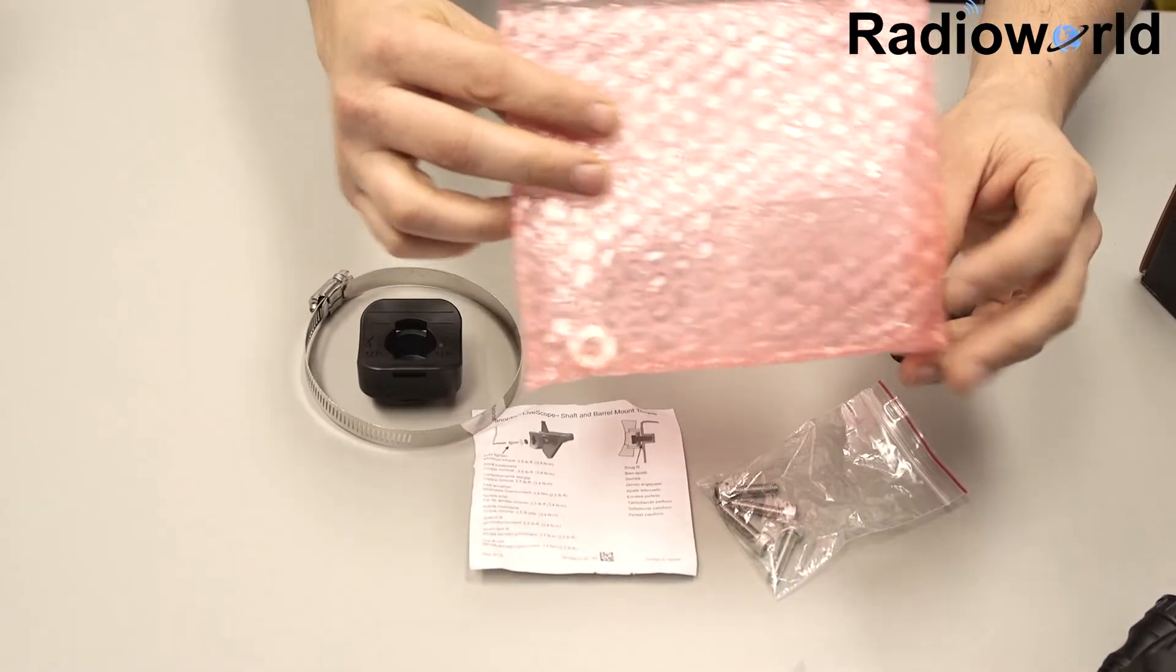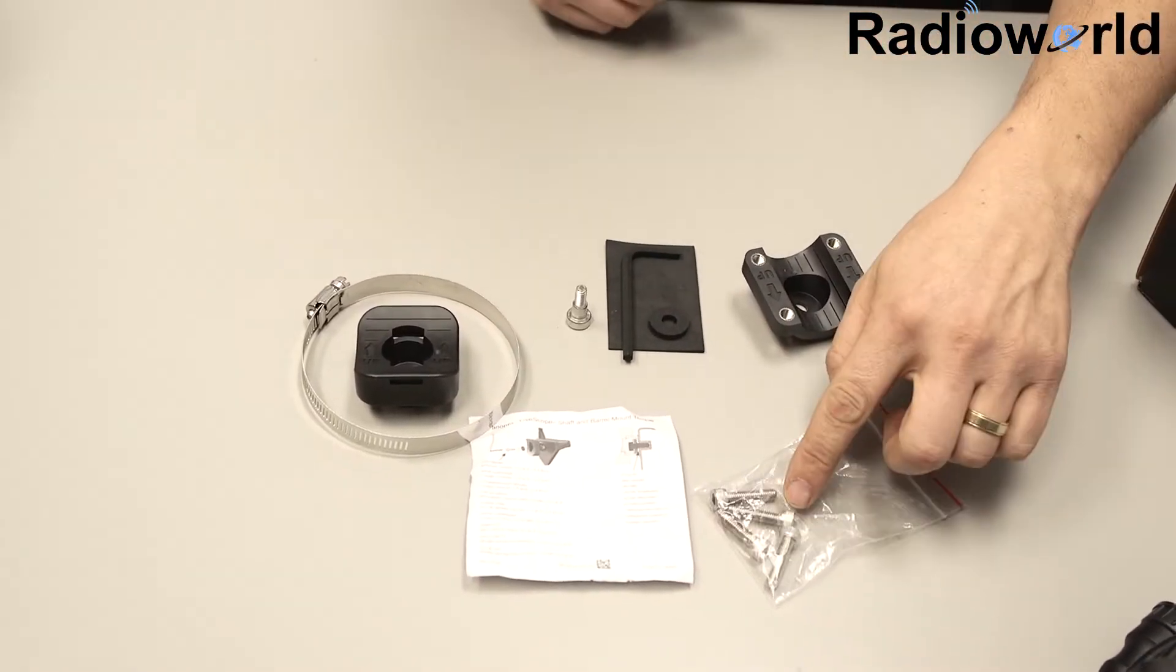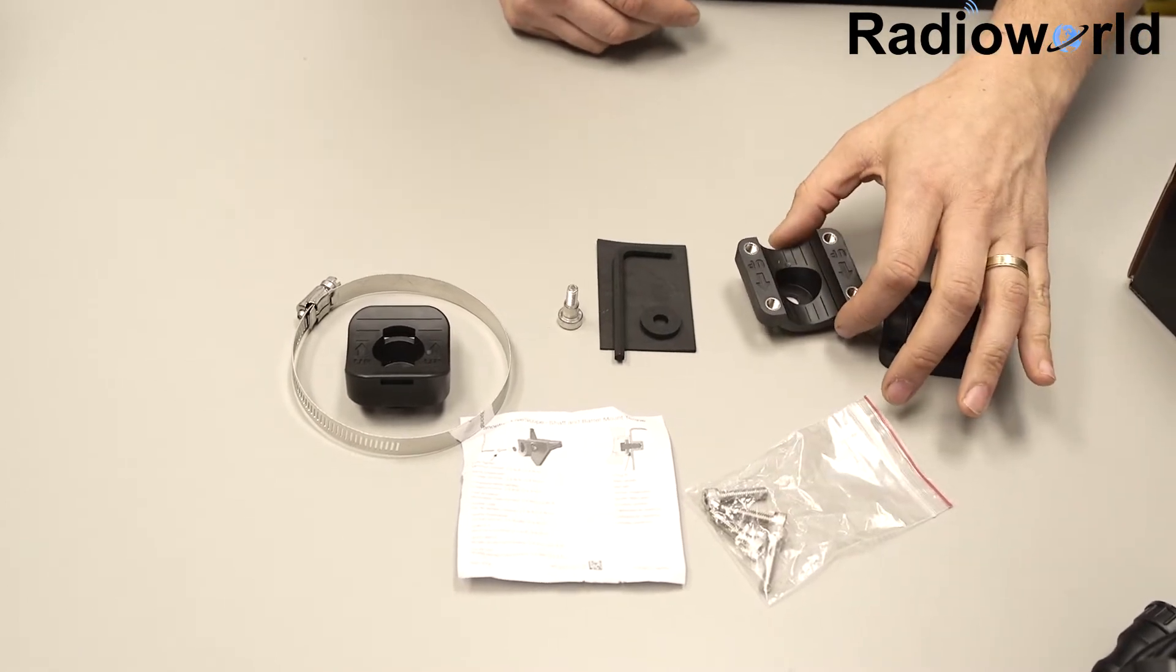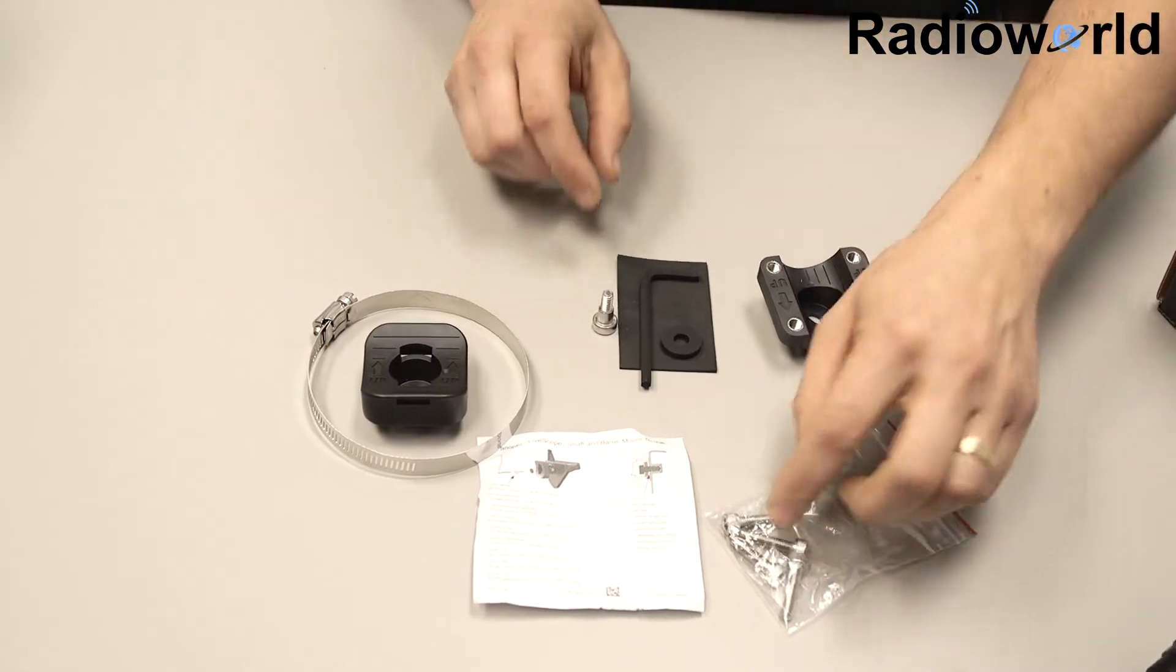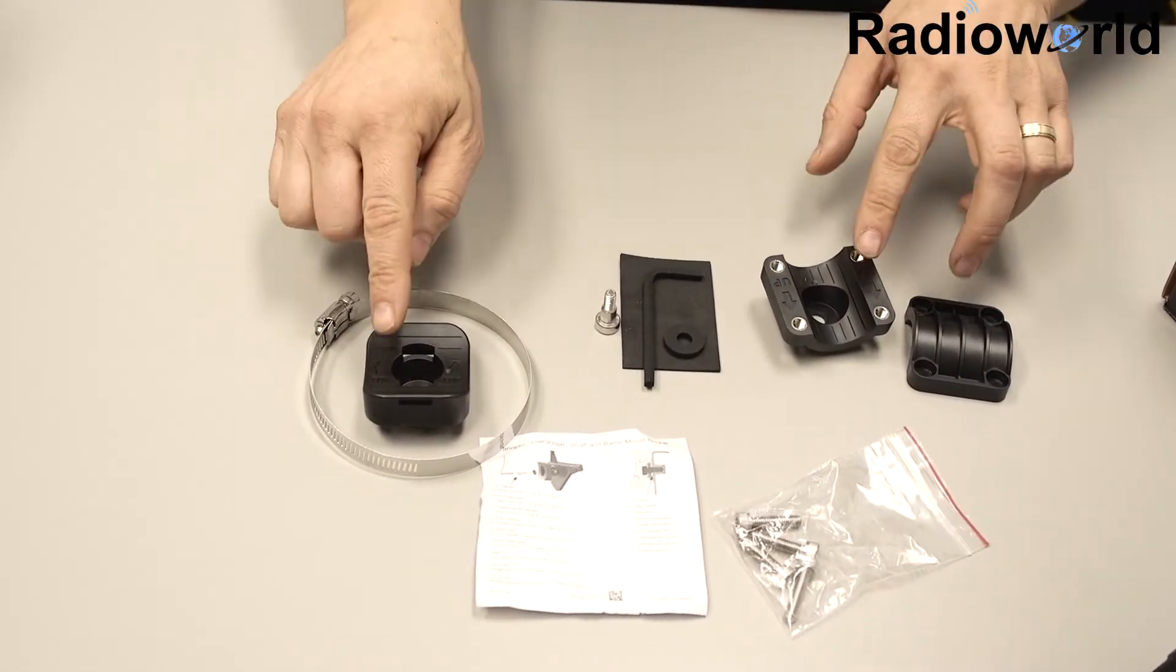Okay, so in the bubble wrap hardware kit, this is what you get: your screws to attach to your Panoptix mounts, an Allen key for this bolt and these ones, some basic instructions, and then your two mounts.